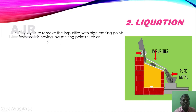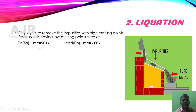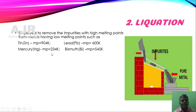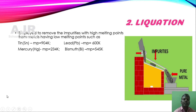Metals that have low melting points include tin (melting point 904 K), lead (600 K), mercury (234 K), and bismuth (545 K). These metals are separated from their high-melting-point impurities by the liquevation process.